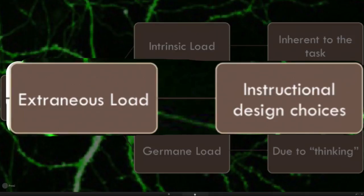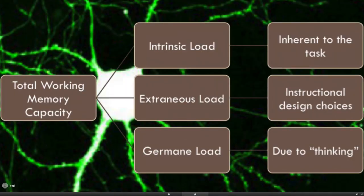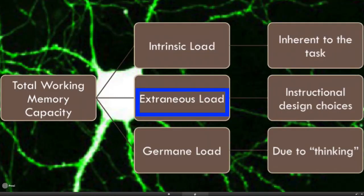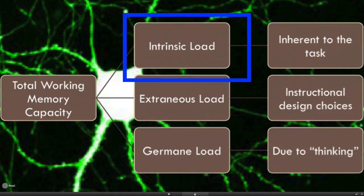The second kind of load is extraneous load — the load taken on in working memory by the instructional design choices you make to teach it. Sometimes what can happen is the actual topic you're trying to learn can be very simply and elegantly presented by your instructional design choices, which illuminate the intrinsic load. But other times the extraneous load can be heavy, unimportant, a waste of time — it distracts you from the actual task, giving you extra things to do which don't count, often in the hope of increasing interest. So you've got to work at reducing extraneous load to make sure more space is left in the limited working memory capacity for the intrinsic load.